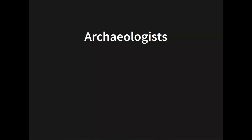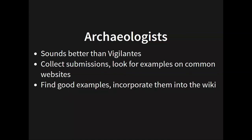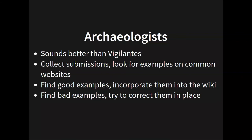It would be nice if we had a way to enlist people to become archaeologists — that's the term I'm sticking with because it sounds better than vigilantes. They would collect submissions of code examples, troll Stack Exchange looking for where someone is wrong on the internet, and where possible incorporate those things into the wiki. In the case of bad examples, see if you can correct them in place — if the Stack Exchange article is still open, post a correction with lots of citations. If it looks professional, it will get upvotes. This is where Google Summer of Docs may come in, as technical writers will be very good at outlining those examples in a more formal way.